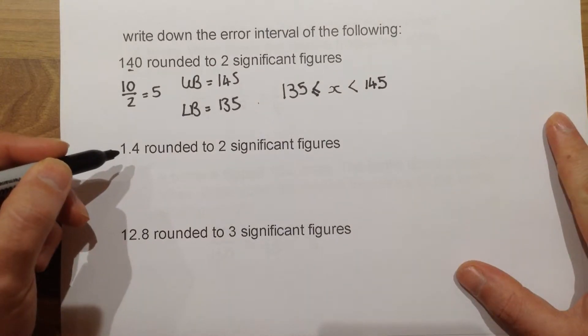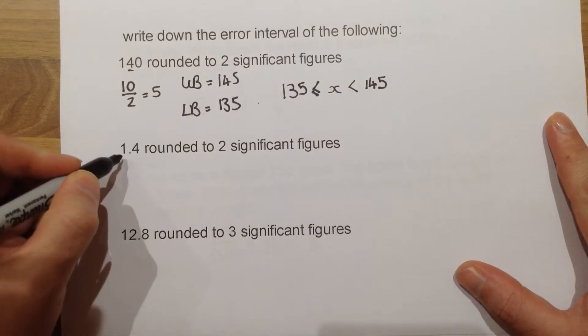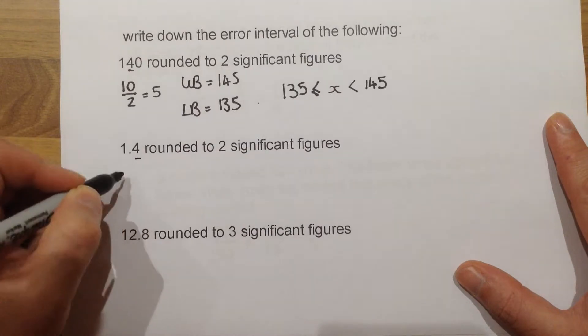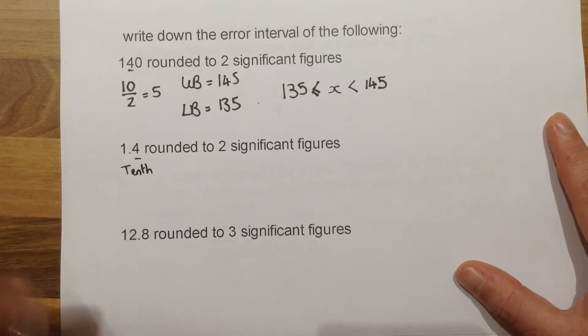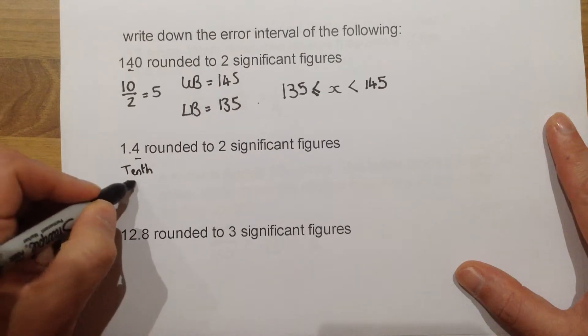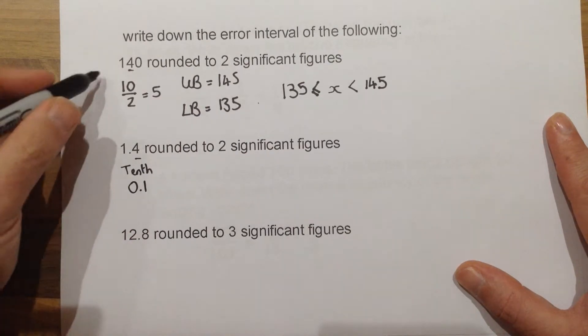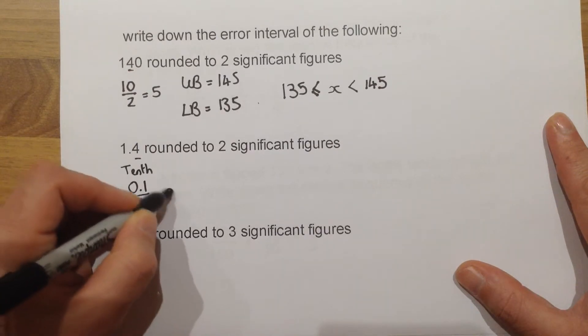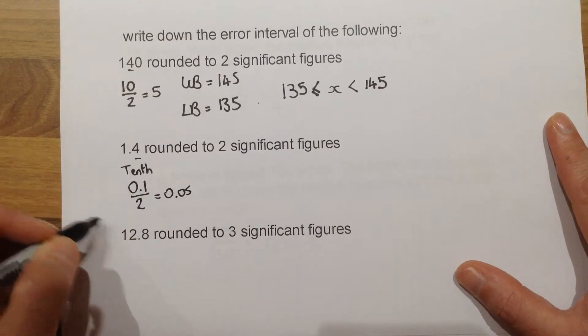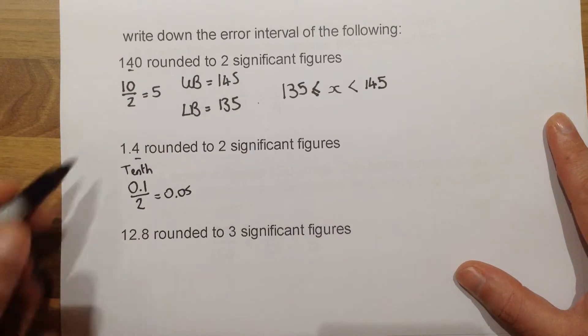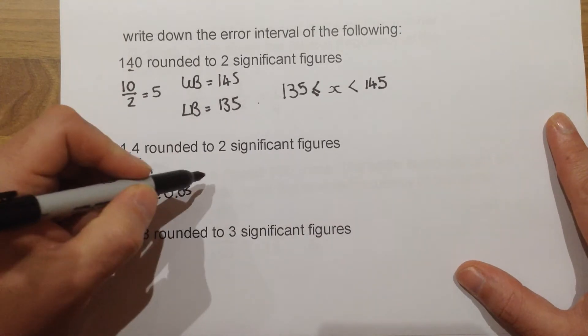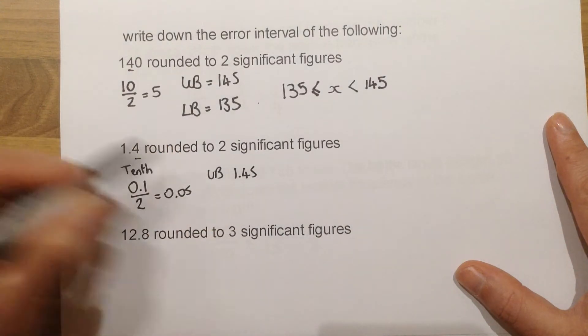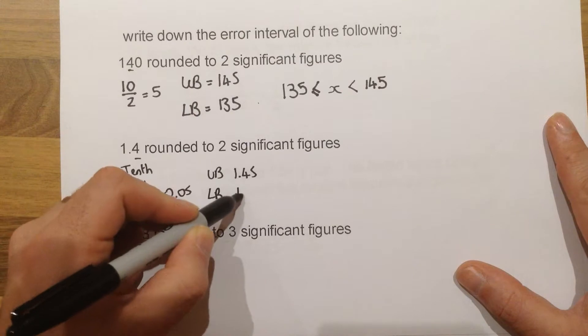For the rounding 2 sig fig on this one, this is your first significant figure, and this is your second. So this is the tenths column. Tenths, which is a number, would be 0.1. So again, using the same idea as before, divide it by 2 to give us 0.05. And it's that much above and below the number we started with, for our upper and lower bounds. So upper would be 1.45 and lower would be 1.35.